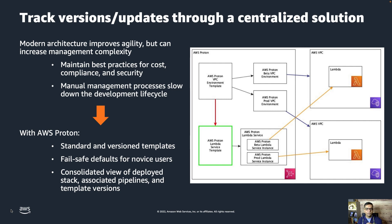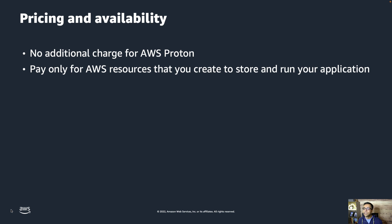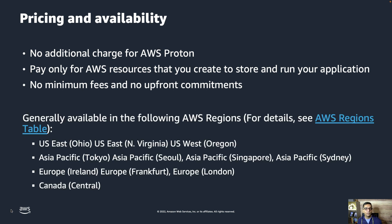AWS Proton takes care of the entire pipeline, provisions the infrastructure, and deploys their code into the new environment. You don't pay any additional charge for AWS Proton — you pay only for the resources you create to store and run your application, like the cluster and the environment you'll be deploying. There is no minimum fee and no upfront commitments. AWS Proton is generally available in US East 1 and East 2, US West, Asia Pacific, Europe, and Canada Central.